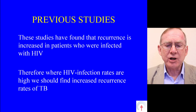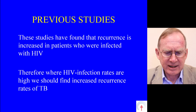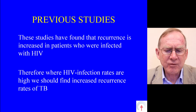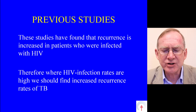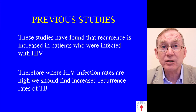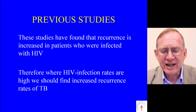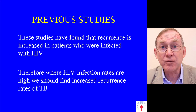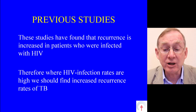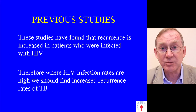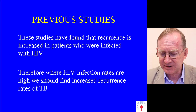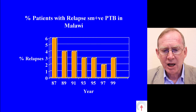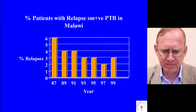To summarise these four studies: they found that recurrence is increased in patients who were infected with HIV. Therefore, where HIV infection rates are high, we should find increased recurrence rates of tuberculosis. So let us go to Malawi.